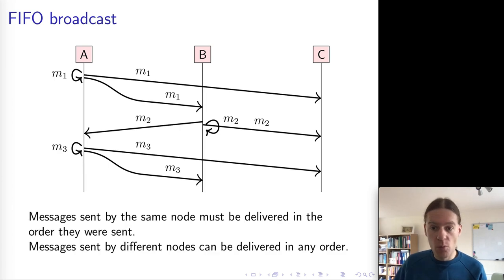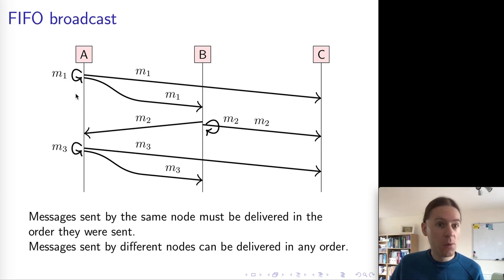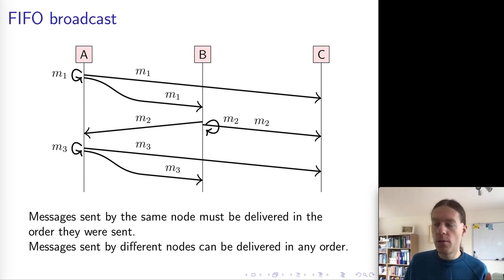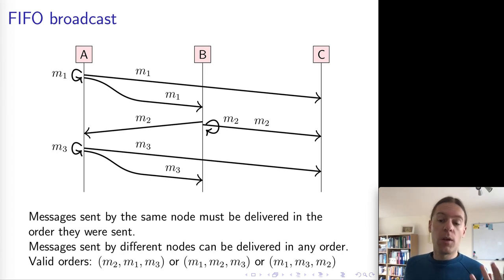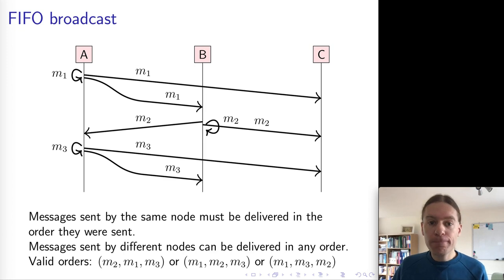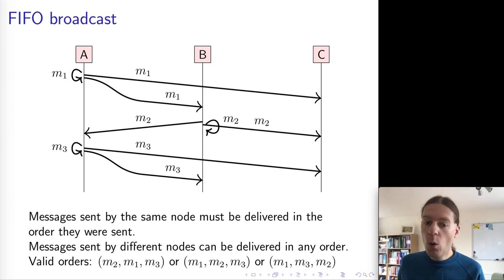In FIFO broadcast, because M1 and M3 are both broadcast by the same node A, we require that all nodes deliver M1 before they deliver M3. We can check that: A delivers M1 then M3, B delivers M1 then M3, and C also delivers M1 then M3. There are actually several possible valid orders here. The message M2, sent by B, can be ordered arbitrarily with respect to A's messages since we make no guarantees about ordering across different nodes. So M2 can be delivered before M1 and M3, in between, or after — all of those are fine.